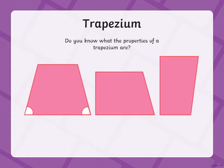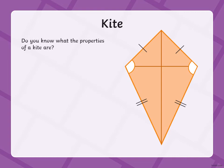Do you know what the properties of a trapezium are? That's right, they have four sides and four vertices — well done. And a trapezium has one pair of parallel lines, or parallel sides.